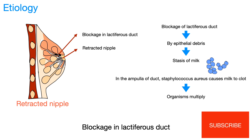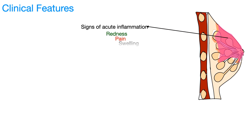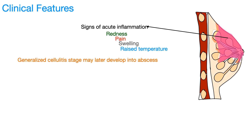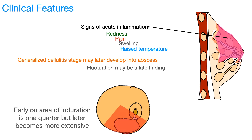A patient with mastitis has all signs of acute inflammation: redness of skin, pain, swelling, and raised temperature. The initial stage is generalized cellulitis, which later evolves into abscess. Fluctuation in mastitis is a late finding.